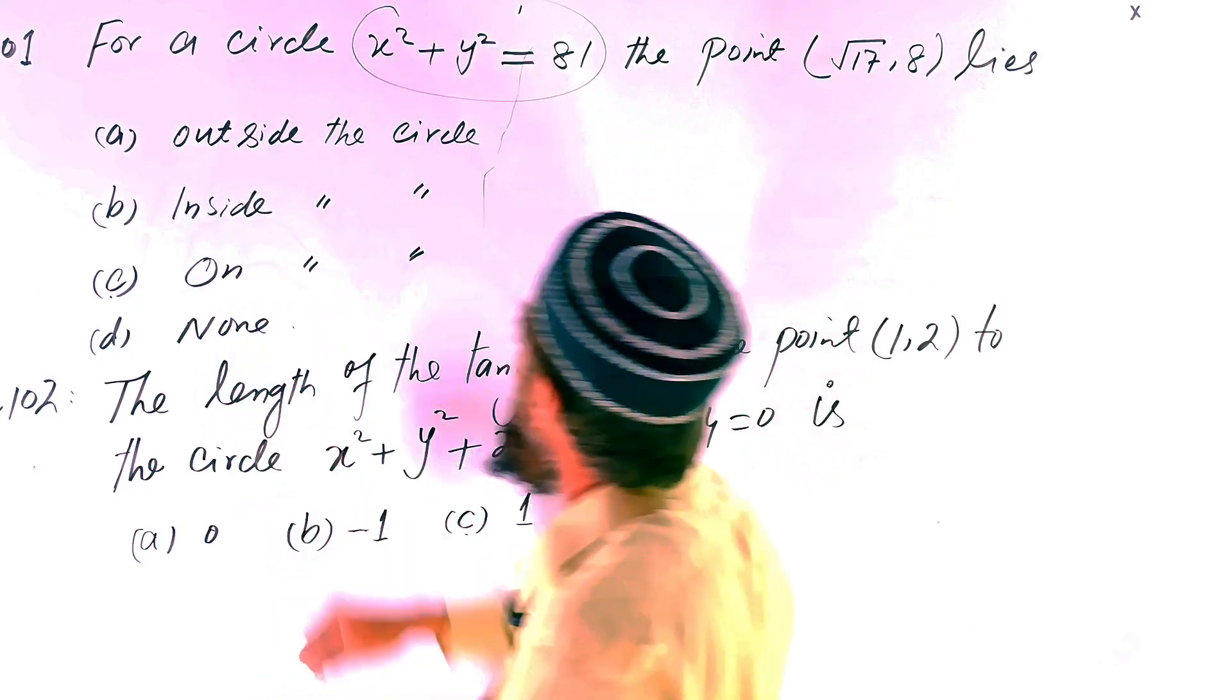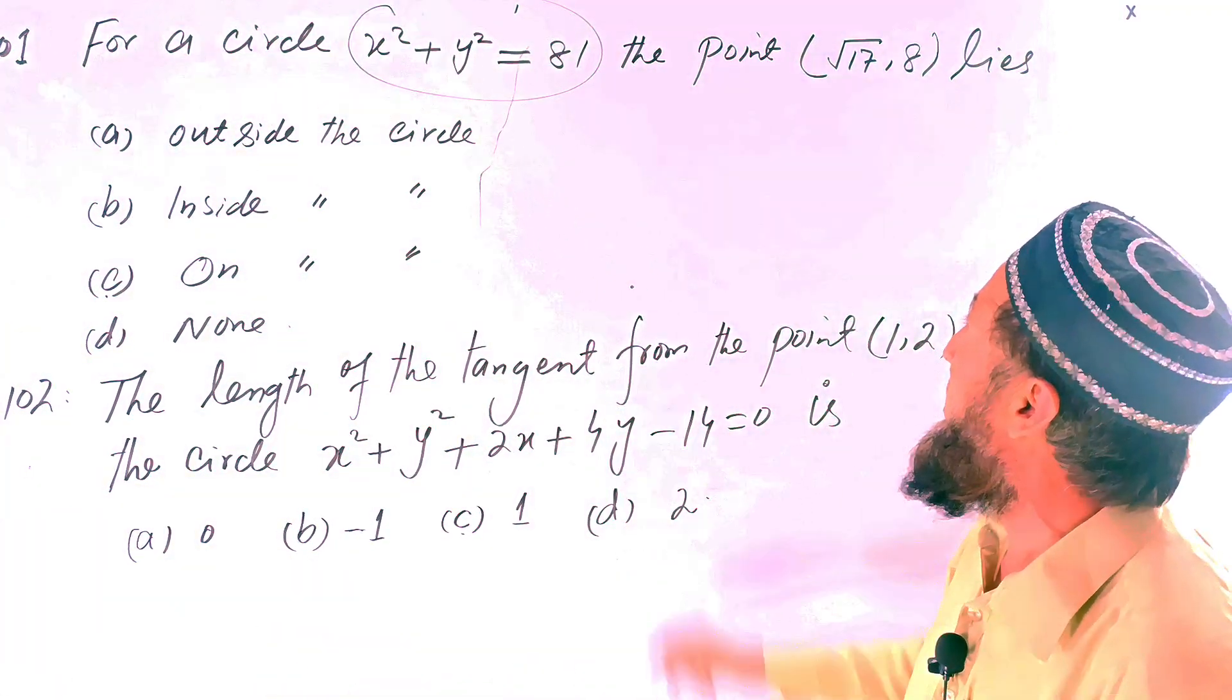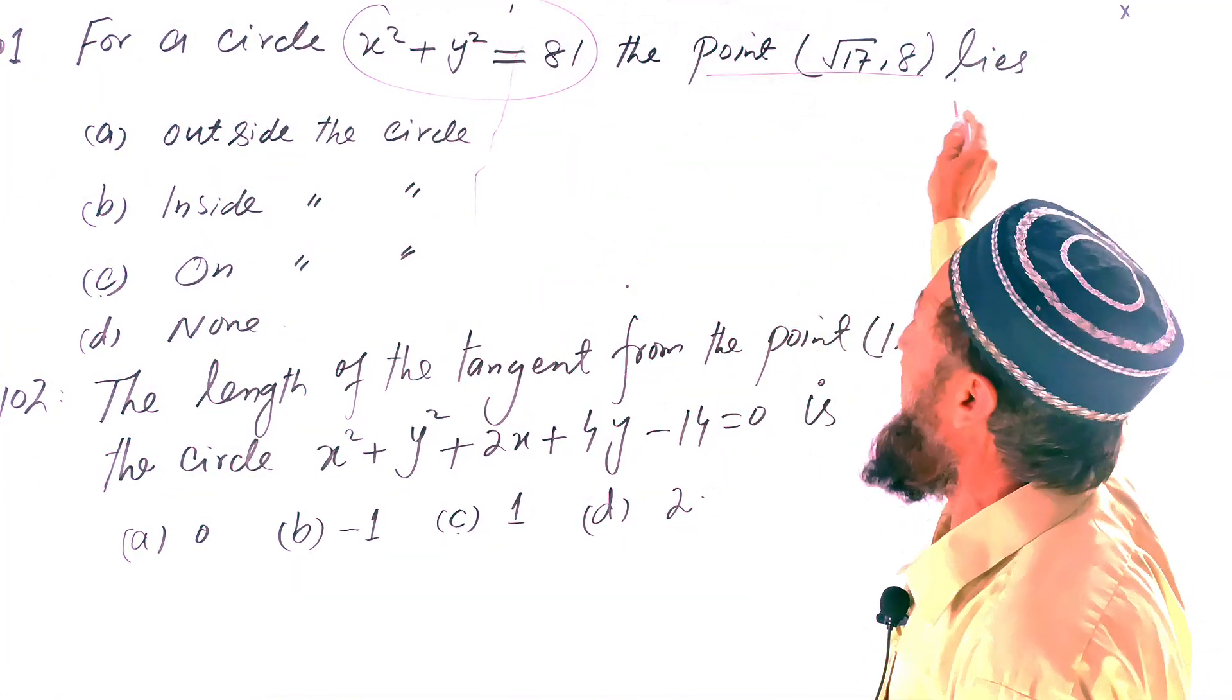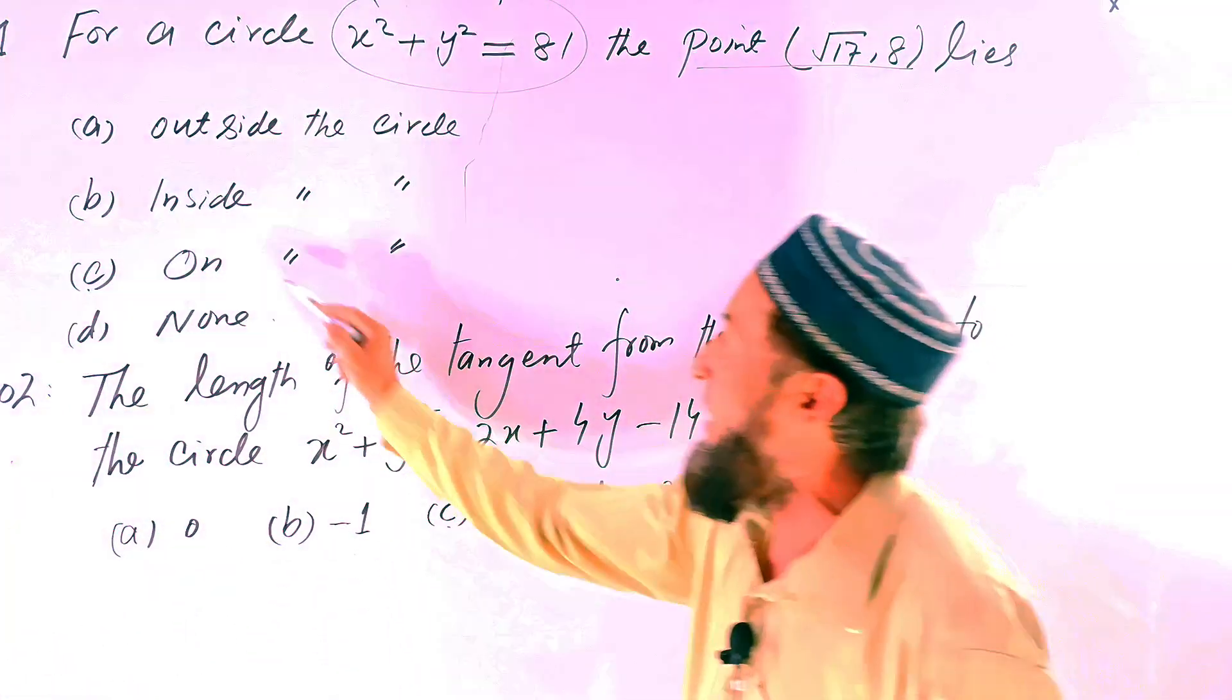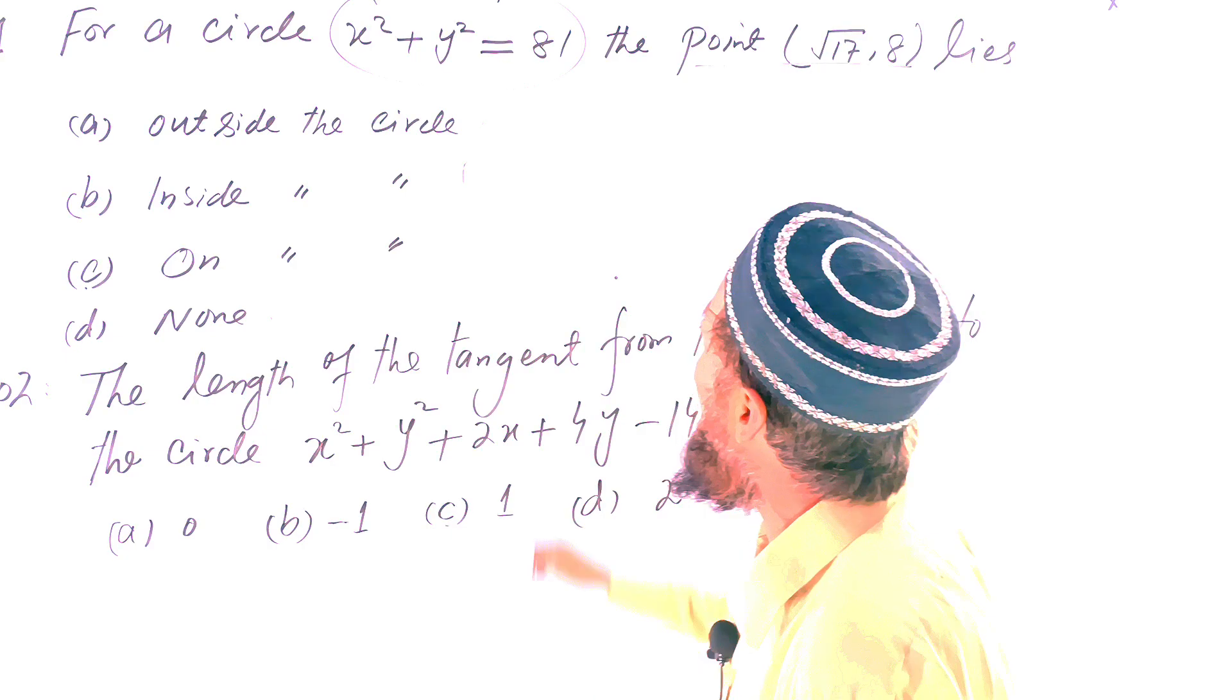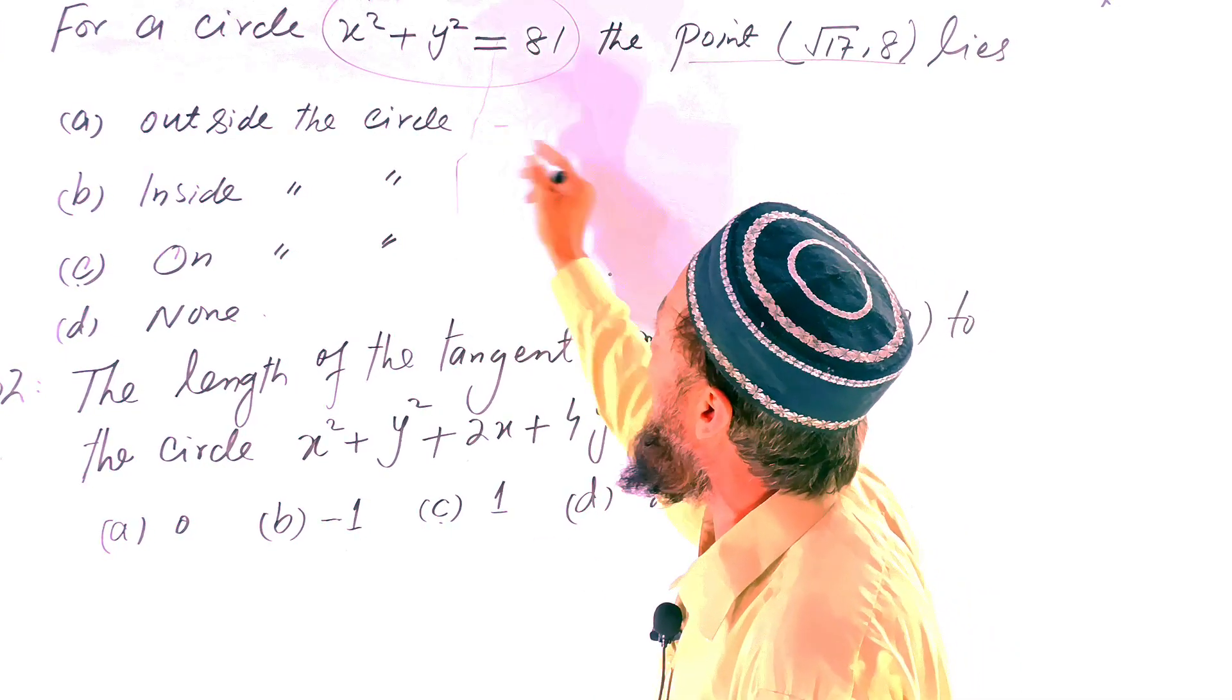The point lies on what - outside the circle, inside the circle, or on the circle? As we know, if the given result is greater than 81, it is outside. If the given result is less than 81, it will be inside the circle. And if on the circle, that will be equal to 81.